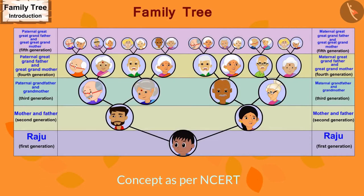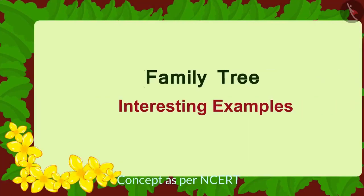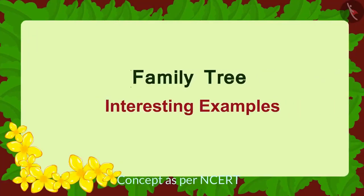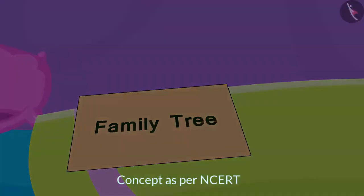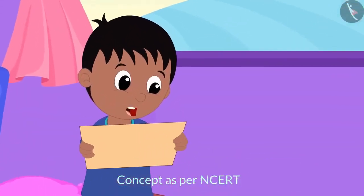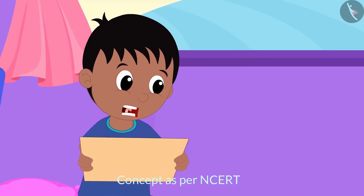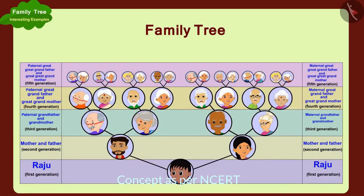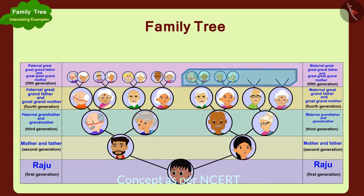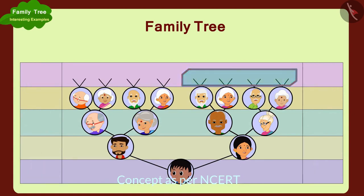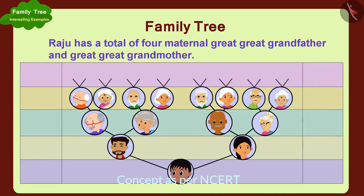Hello children! In the previous video we learnt about the family tree. In this video we will learn more about it through some interesting examples. When Raju returned home after playing, he saw the family tree made by his father on the sofa. Out of so many people, how many maternal great-great-grandfathers and great-great-grandmothers do I have? Raju's maternal great-great-grandfather and great-great-grandmother will be his mother's great-grandfather and great-grandmother. Raju has a total of four maternal great-great-grandfathers and great-great-grandmothers.